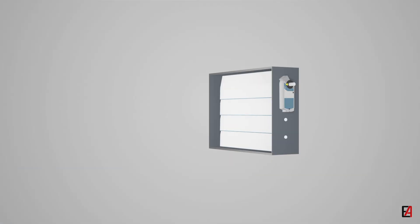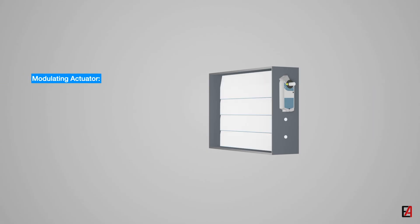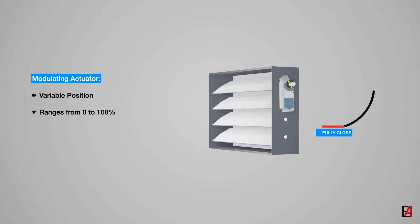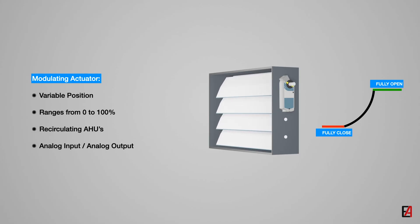The actuator type differs based on the AAHU application and its use. Typically, damper actuators can be either of the following types. The first is the open-close actuator — the damper will operate only in two positions: either fully closed or fully open. This type is used in pressure handling units, and the BMS signals used are digital input and digital output. The next is the modulating actuator, where the damper can be operated in various positions ranging from 0 to 100%, with 0 being fully closed and 100 being fully open. This type is used in re-circulating handling units to control the amount of air as determined by BMS controls, and the BMS signals used are analog input and analog output.